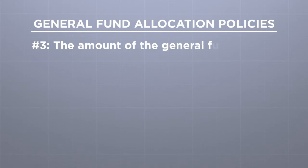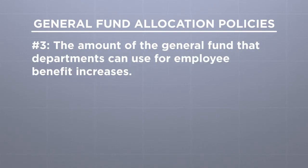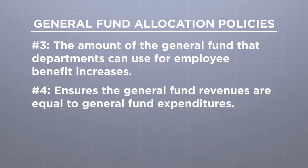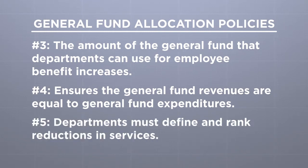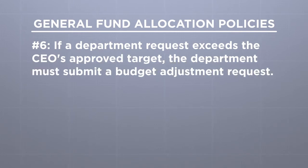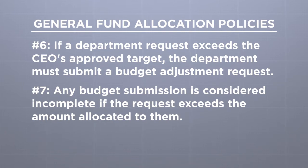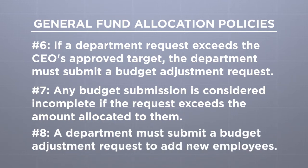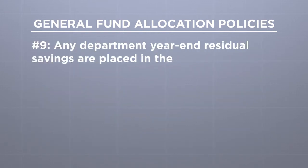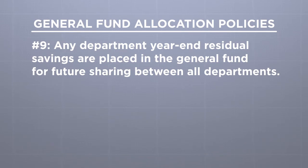The third general fund allocation policy addresses the amount of general fund money a department can use to spend on employee benefit increases. The fourth policy makes sure the amount of general fund revenues is equal to general fund expenditures. If a department needs to reduce services, it must define what services will be reduced and rank the reductions in order of severity. If a department request exceeds the CEO's approved budget target amount, the department will need to submit a budget adjustment request. For policy number eight, a department must submit a general adjustment request if they wish to add new employees. For the final policy, any department year-end residual savings are placed in the general fund for future sharing between all departments.